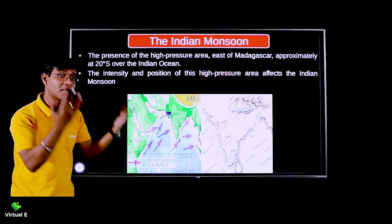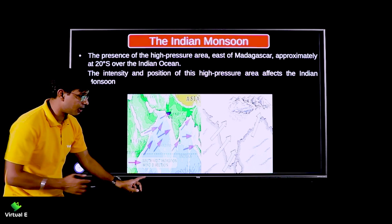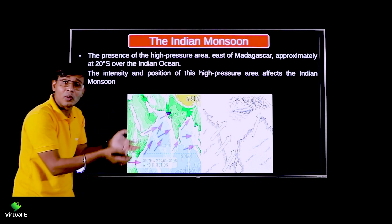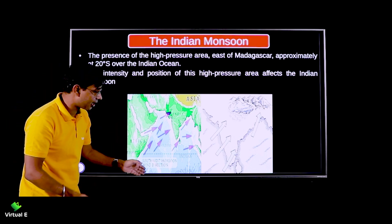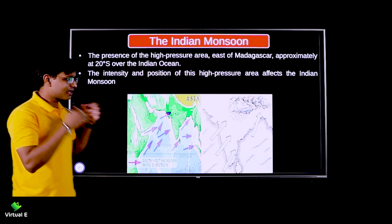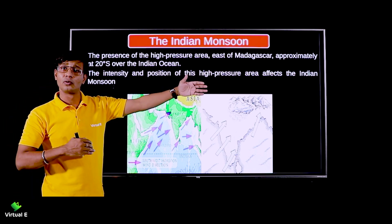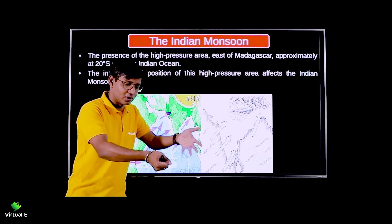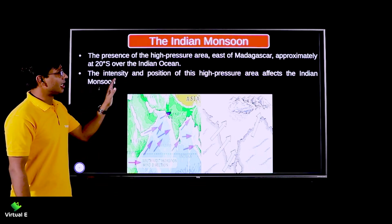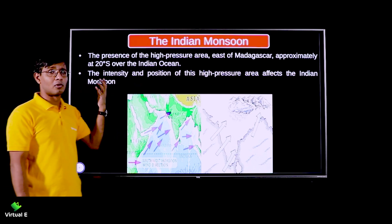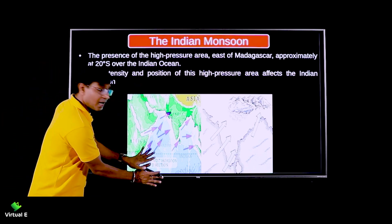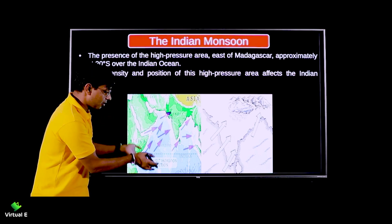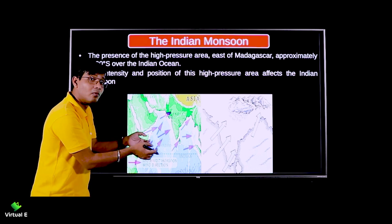There is a high pressure area east of Madagascar. Madagascar island is here, and to its right is the entire high pressure area. That is why winds blow from this end and carry a lot of water, because the distance from Madagascar to India is very long - the more the wind travels over ocean, the more water it carries. Also, the intensity and position of this high pressure area affects the Indian monsoon - more high pressure means more winds, more water, and more rainfall.